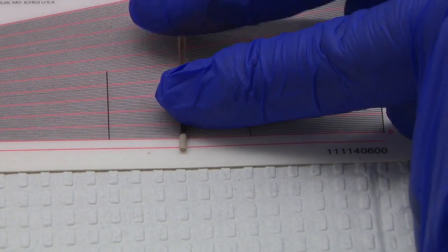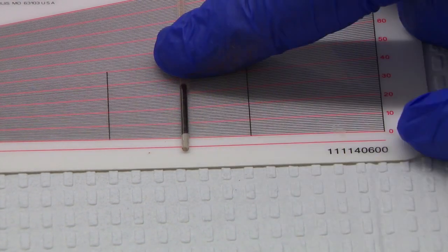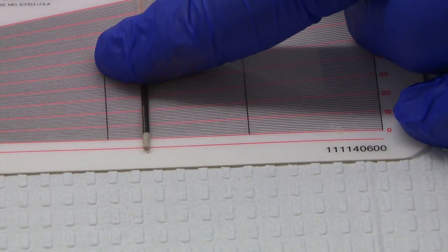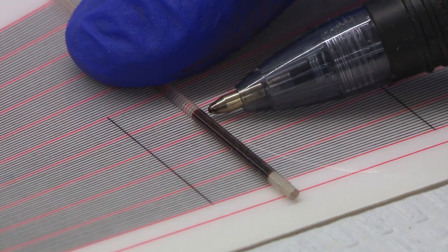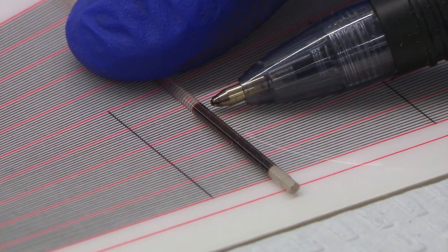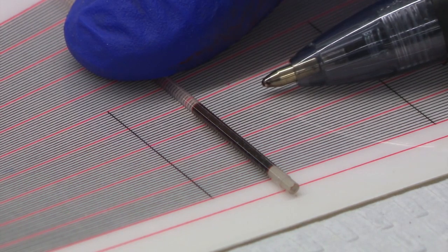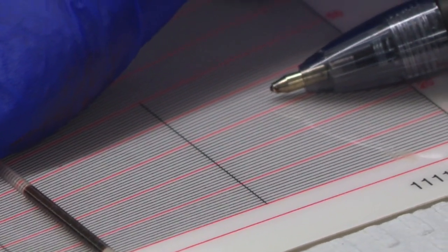Move or roll the tube along the card until the meniscus of the plasma aligns with the 100 mark, which is the top line. Once you find this point, look at the line at the top of the packed red cells, excluding the buffy coat.